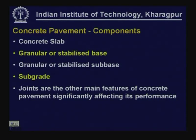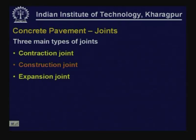Joints are the other main features of concrete pavement which significantly affect its performance. There are various types of joints — in fact there are three main types: contraction joint, construction joint, and expansion joint.